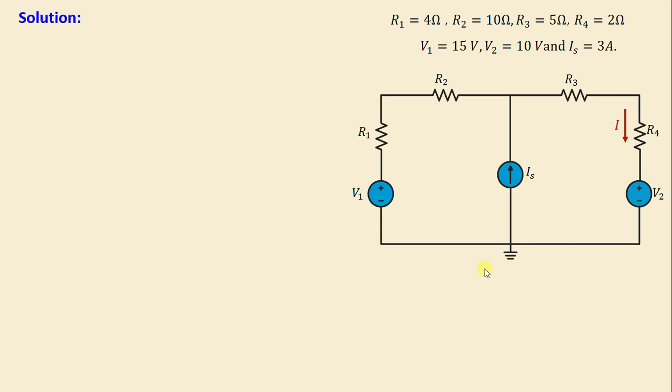In the solution we will proceed with the same steps we have used in mesh analysis. The first step is to define the number of meshes. In this network we have two meshes. This is mesh 1 and this is mesh 2. In step 2 we assign the mesh currents. I1 is the current in mesh 1 and I2 is the current in mesh 2. Both currents are chosen in the clockwise direction.